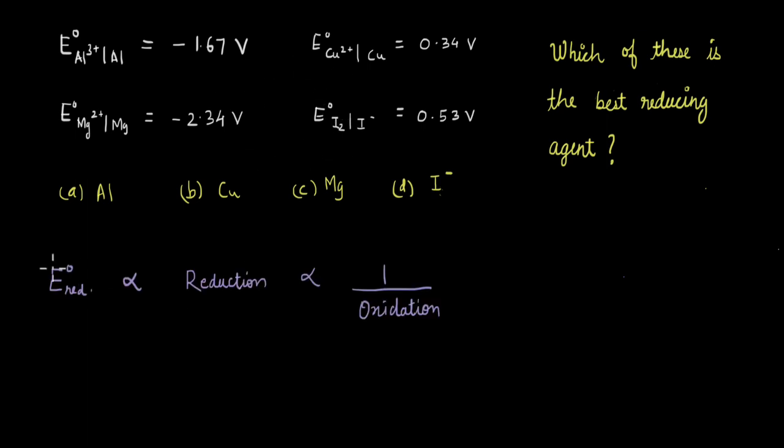We know that the higher the value of the standard reduction potential, the more likely reduction is. Because reduction and oxidation are complementary processes, higher likelihood of reduction means lower likelihood of oxidation. So higher reduction potential means easier reduction and harder oxidation.